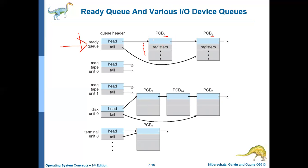The PCB includes all other information about a particular process. Similarly, all these are device queues for various devices. The first device is magnetic tape unit 0. It is assumed that the system has two magnetic tapes — unit 0 and unit 1. For unit 0, the head is pointing to null and the tail is also pointing to null, meaning the queue is empty — no process is currently using magnetic tape unit 0. Similarly, no process is using magnetic tape unit 1. For the disk (hard disk), there are three processes in the queue: process 3, process 14, and process 16.